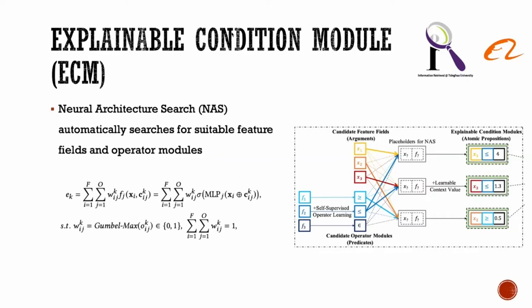With ECM as the explainable module, rule learning can be conducted as neural architecture search, which automatically searches for suitable arrangements of feature fields and operator modules. We adopt the Gumbel-Max trick to allow end-to-end learning of these feature-operator selecting weights.